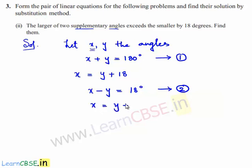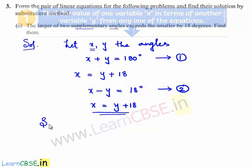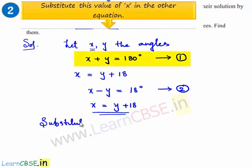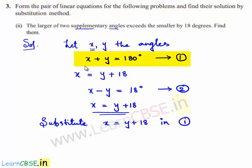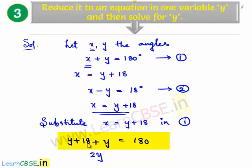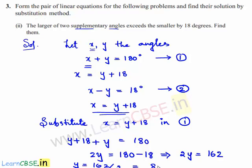So x is equal to y plus 18. Substituting the value of x in equation number one: in place of x we write y plus 18, so y plus 18 plus y is equal to 180. y plus y is 2y, and transposing 18 to the right hand side: 2y is equal to 180 minus 18, which gives 2y is equal to 162. So y is equal to 162 divided by 2, which is 81 degrees.